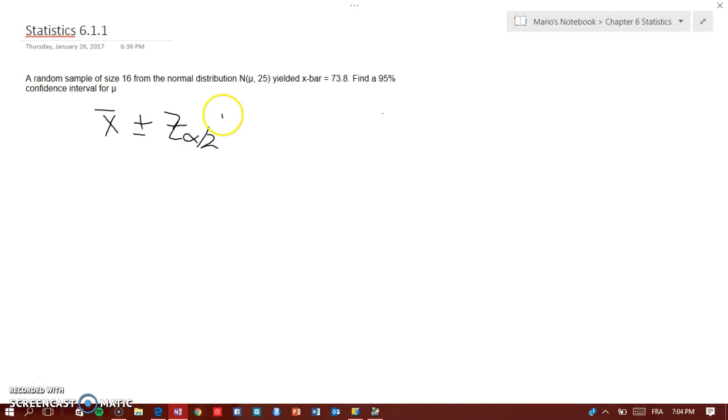And that would be x̄ is 73.8 plus or minus z of α over 2 is going to be 1.96.